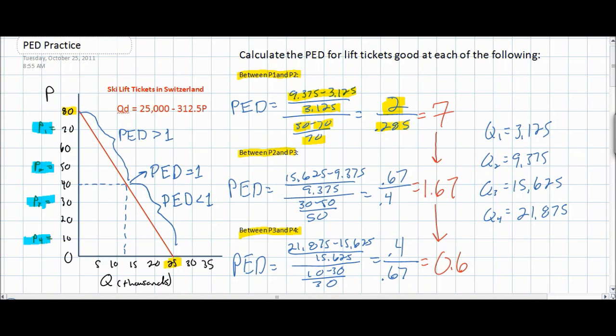This concludes our lesson on price elasticity of demand and the total revenue test. To conclude, let's review: a decrease in price that leads to an increase in total revenue indicates elastic demand with PED greater than one. If a change in price leads to no change in revenue, PED equals one. If a decrease in price leads to a decrease in total revenue, then PED is less than one and demand is inelastic.